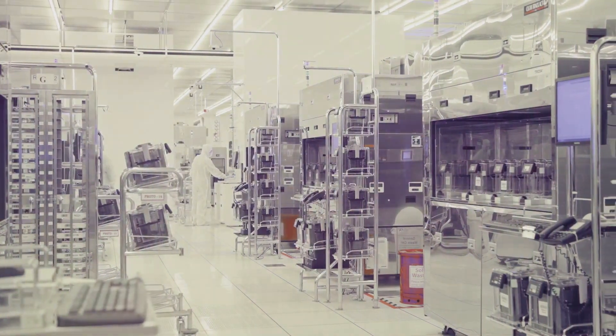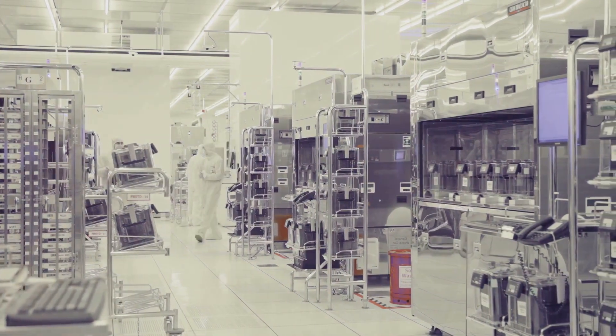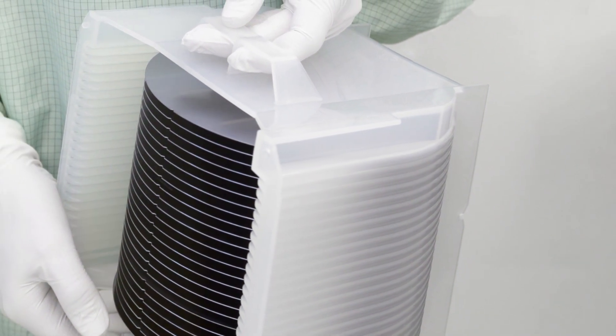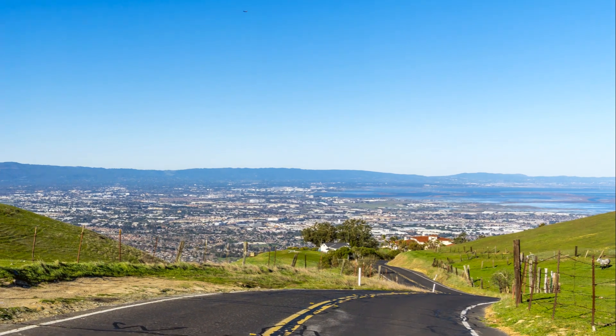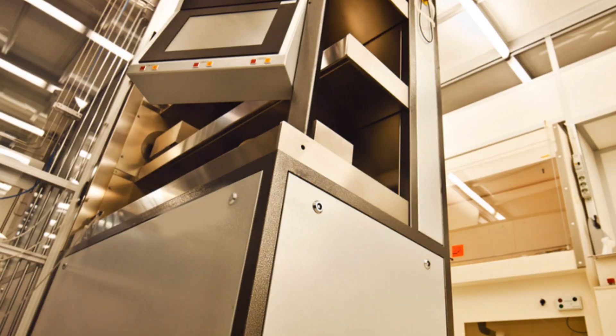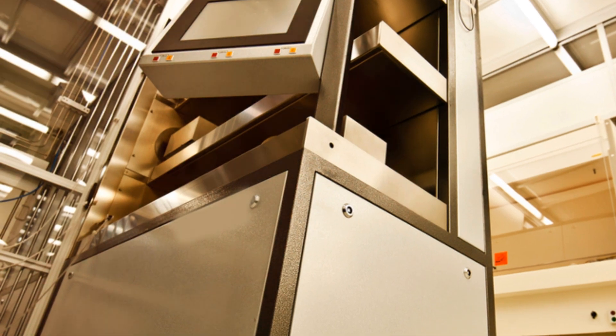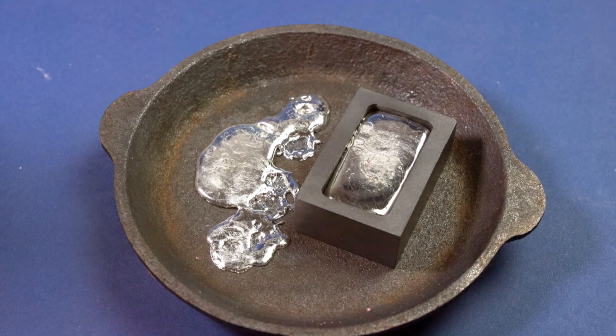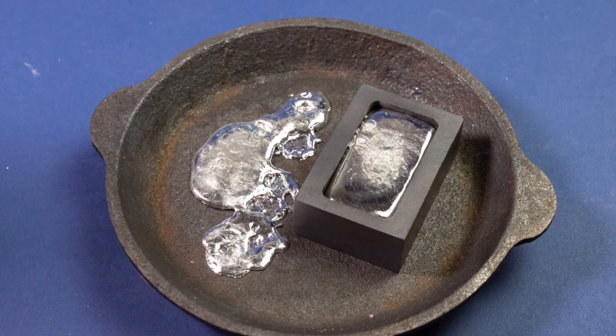But we're not done yet. The melting process isn't just about heat, it's also about creating the right environment. We need an atmosphere that won't interfere with our silicon melt. Enter argon, a noble gas that's as unreactive as they come. The melting process takes place in an argon-filled chamber, ensuring that our melt remains uncontaminated. This inert atmosphere is crucial as it prevents any unwanted reactions between the silicon and air.